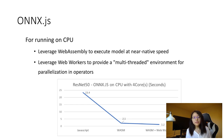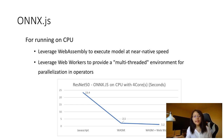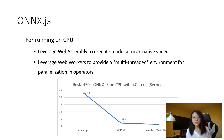Furthermore, ONNX.js utilizes Web Workers to provide a multi-threaded environment for operator parallelization. Originally, Web Workers were introduced to unblock UI rendering — they allow you to create an additional thread to run other computation separately. ONNX.js uses Web Workers to enable parallelization within heavy operators, which significantly improves performance on machines with multiple cores. By taking full advantage of both WebAssembly and Web Workers, the final result shows over 19 times speedup on CPU with four cores.